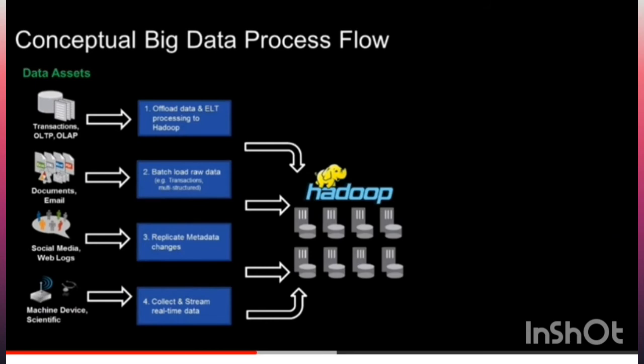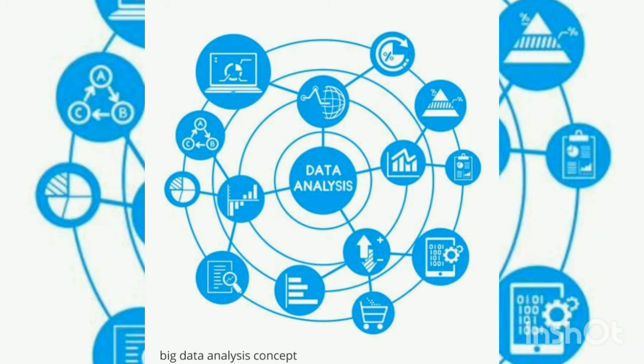Next, how to process big data? Suppose A is a huge file and it is divided into 3 different parts: task B, task C, and task D. Instead of one machine, 3 different machines will each process one task and then assemble the result at the end. This process is called parallel processing. It is very easy and fast, and this is the way to process big data. Now we have learned how big data is stored and processed.